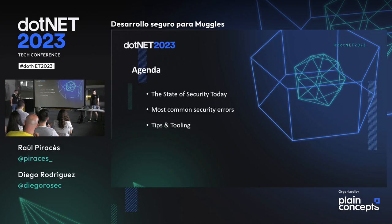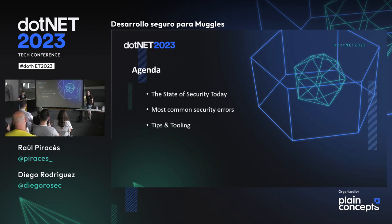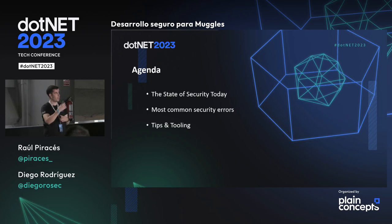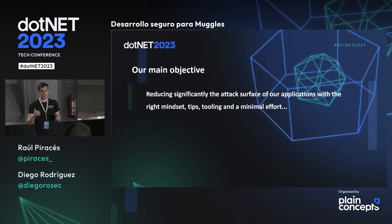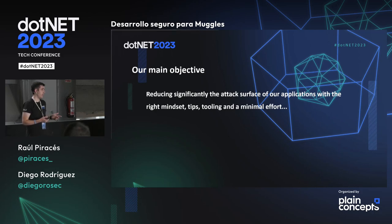¿Qué vamos a ver hoy? En primer lugar, el estado de la seguridad hoy en día, que ya os adelanto que es bastante mejorable. Luego veremos errores típicos que solemos cometer en nuestro día a día al desarrollar software, y terminaremos con algunos tips y mucho tooling, open source o de otros vendors. El objetivo es reducir significantemente la superficie de ataque con la mentalidad de Shift Security Left.